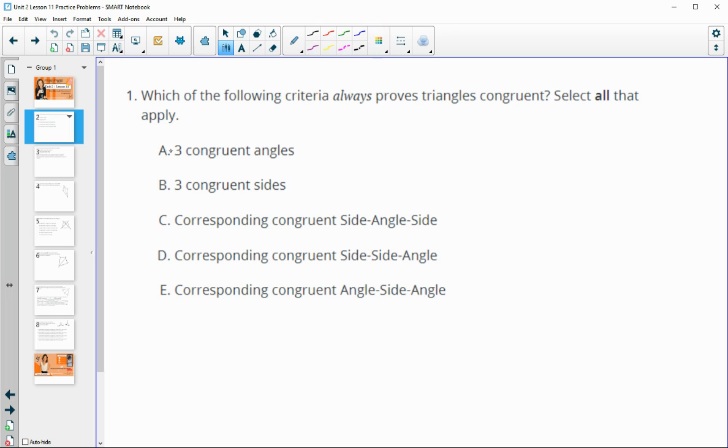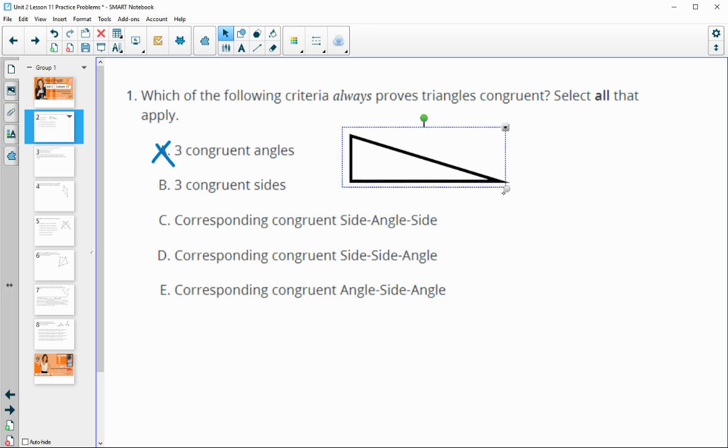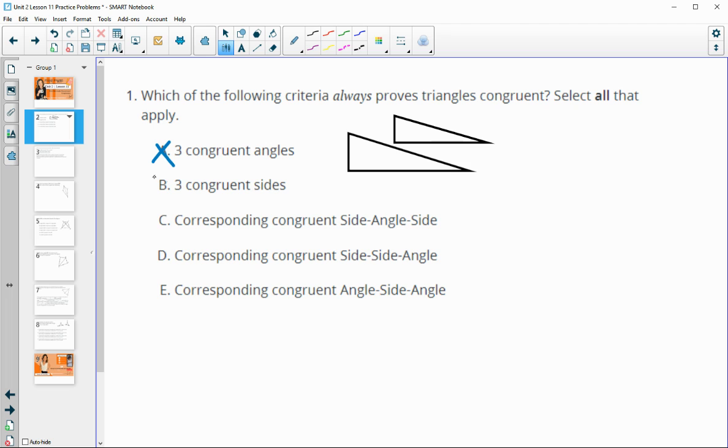First one says three congruent angles. That is false. We can look at an example here. So if I just draw a triangle, let me change the angles. There's a triangle. And if I just make this bigger or smaller, the angles are staying the same size. But the triangles are not congruent. So that angle, that angle, and that angle are all still the same size. But the triangles are not congruent because the sides did not stay the same size. So A is incorrect.